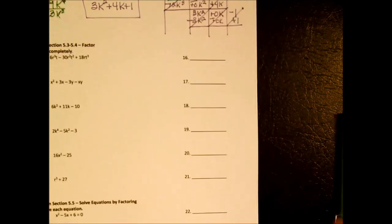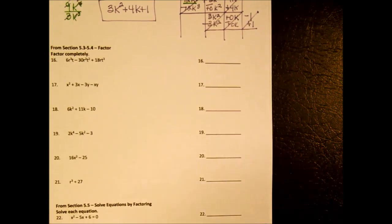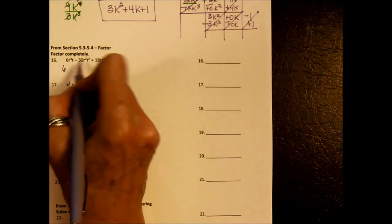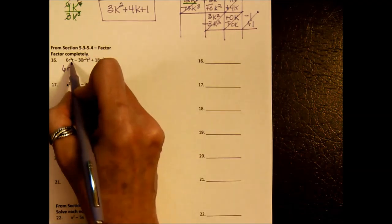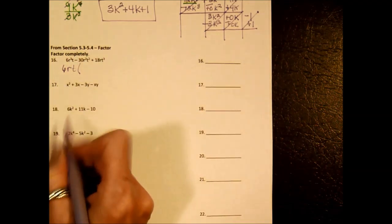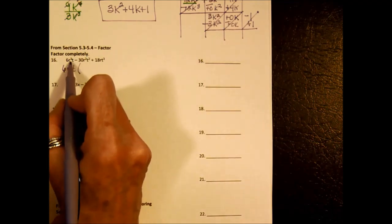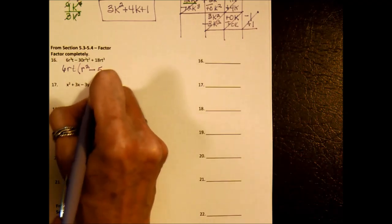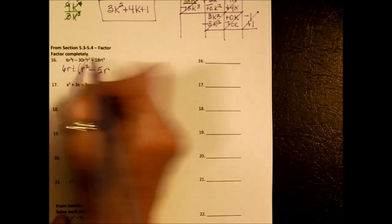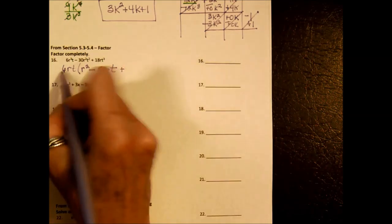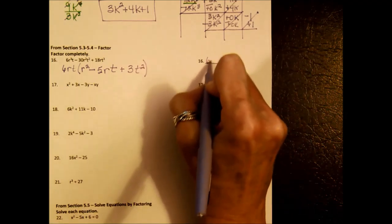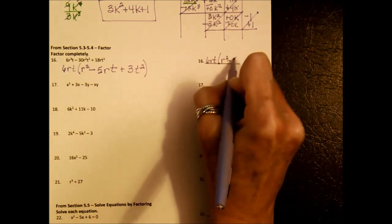Now let's look at factoring. Factor completely. The first one: factor out the GCF. The GCF is 6RT — 6 from the numbers, R from the R terms, and T from the T terms. What's left: 6RT times (R squared minus 5RT plus 3T squared).